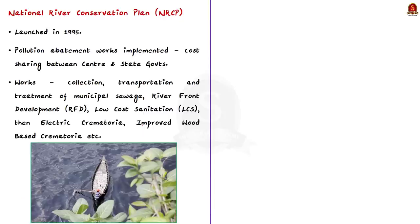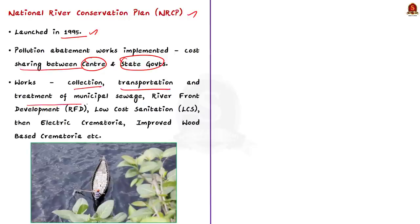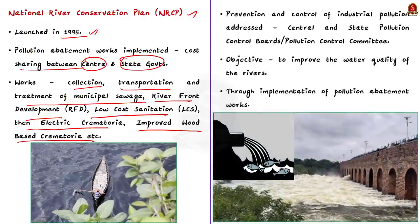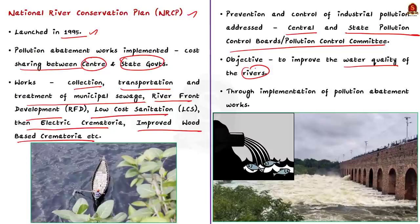The National River Conservation Plan was launched in 1995. Under this plan, pollution control works are implemented on a cost-sharing basis between the Central and State Governments. Works include collection, transportation and treatment of municipal waste, riverfront development, low-cost sanitation, electric crematoria, and improved wood-based crematoria. Prevention and control of industrial pollution is addressed by Central and State Pollution Control Boards. The objective of National River Conservation Plan is to improve the water quality of rivers — the major source of water in the country — through implementation of pollution control works.